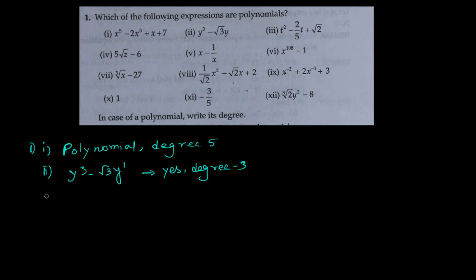The next one is t squared minus (2/5)t plus root 2. Again, there are no negative or fractional powers upon the variables. The coefficient — the number along with the variable — can be a fraction or negative, but that doesn't matter. We are only talking about the power of the variable. So it is a polynomial, and the highest power is 2, so the degree is 2.